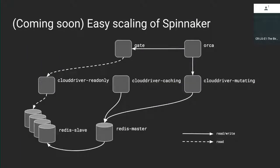The last thing — not yet implemented but coming soon — is easier scaling of Spinnaker. There are creative ways to split out subservices by what they need to do. For example, you can have one instance of Cloud Driver that only serves cached information serviced by Gate, and then another Cloud Driver that does all the heavy caching of resources, which can be quite slow. You can scale the caching Cloud Driver however you want without it needing to handle requests from Orca or Gate. Halyard can pretty much set this up for you automatically.